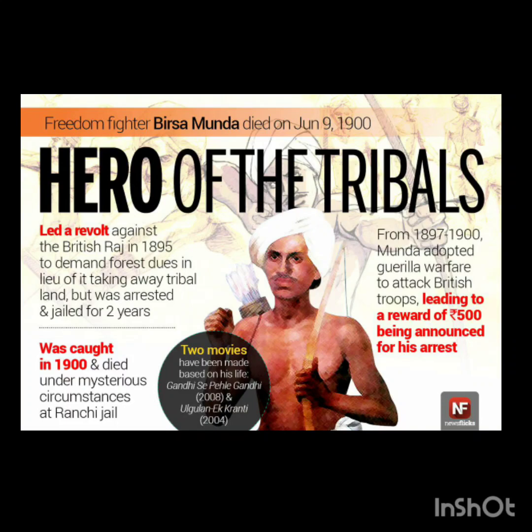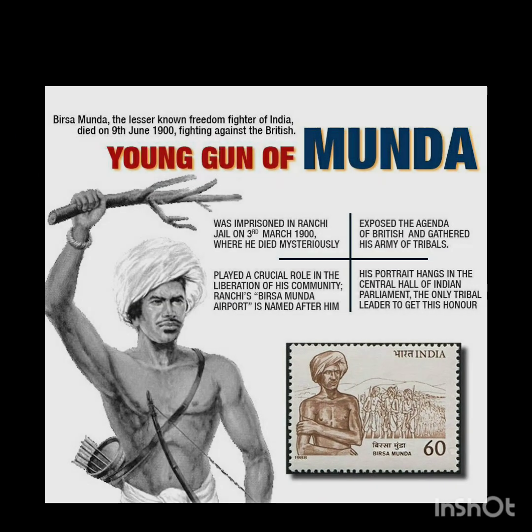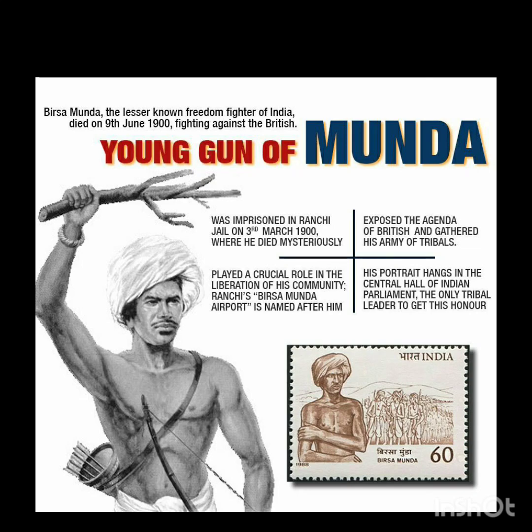The Munda uprising took place in the Chotanagpur region of Jharkhand. Birsa Munda declared the Mundas to be free from British rule and asked the people not to obey anyone but him. He also told the Mundas not to pay rent to the British. The movement became violent, and officials, landlords, and missionaries were attacked with bows and arrows.